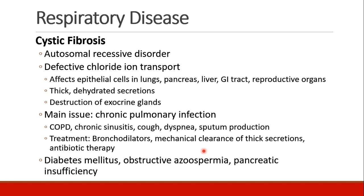Cystic fibrosis is a genetic disorder — it's autosomal recessive. The specific genetic problem is a defect in their chloride ion transport, and this affects epithelial cells in many tissues: the lungs, the pancreas, the liver, the GI tract, the reproductive organs. Secretions become thick, sticky, and dehydrated, and exocrine glands — glands that secrete things like your pancreatic enzymes — also become destroyed. The main issue with cystic fibrosis patients is chronic pulmonary infection, because they get this thick, sticky, dried-out mucus that they can't clear out of their lungs.